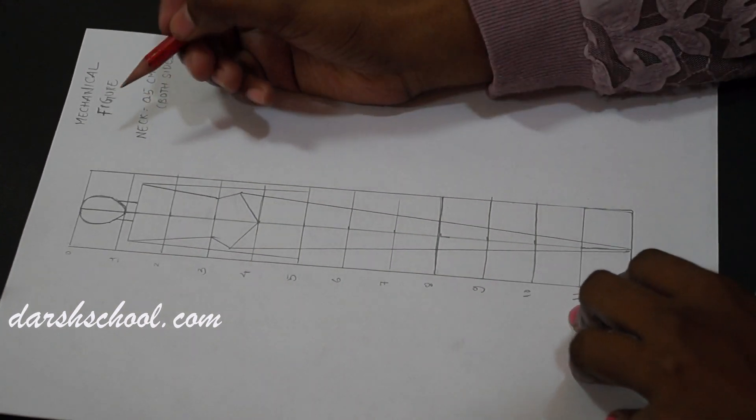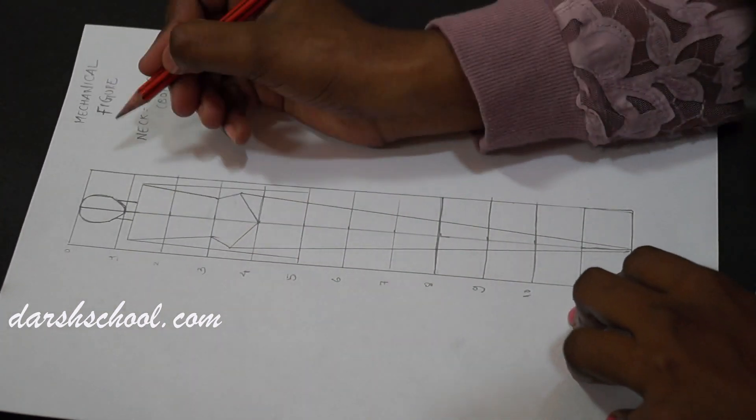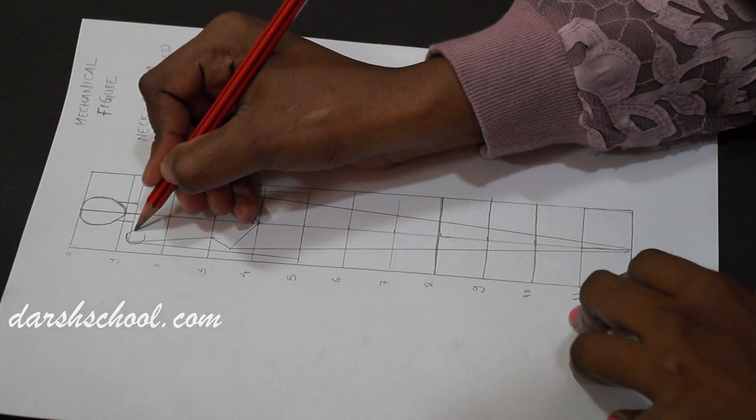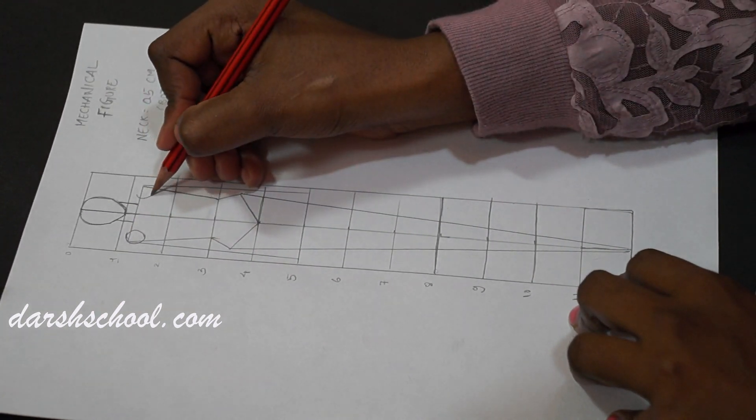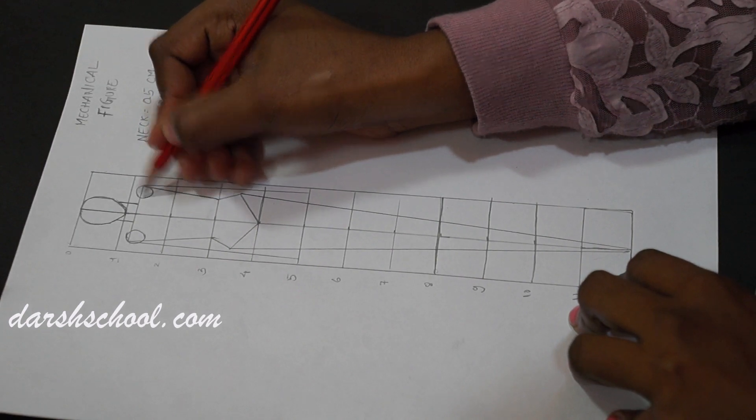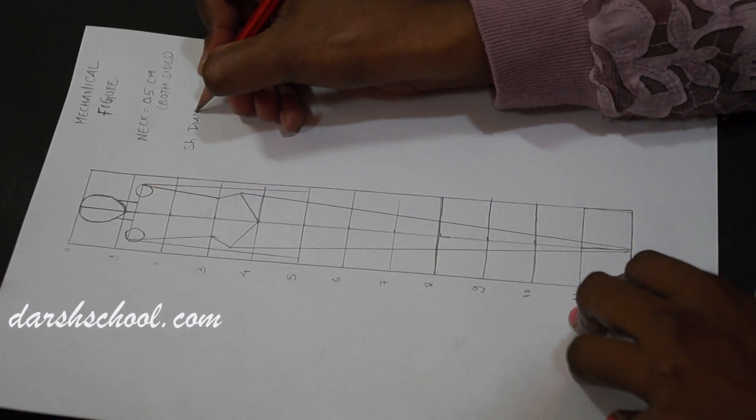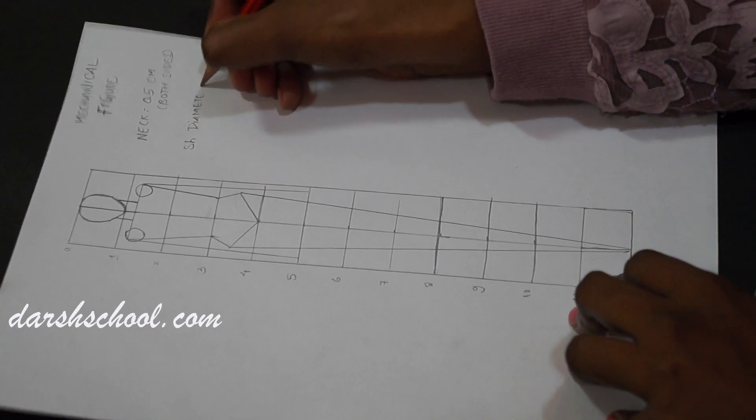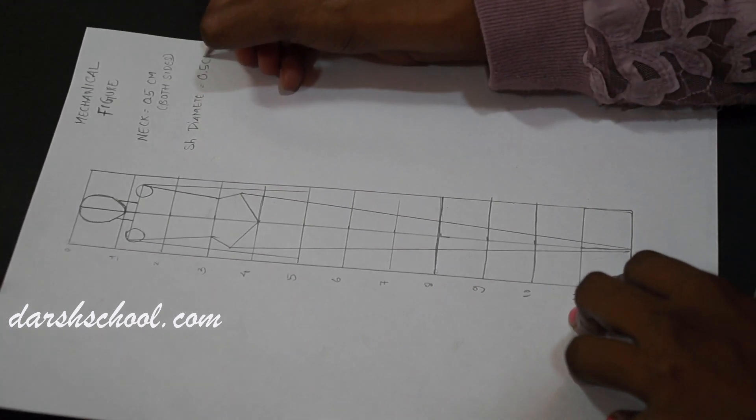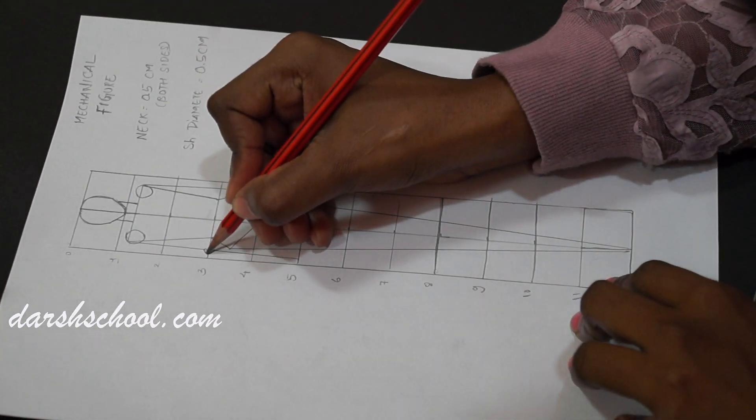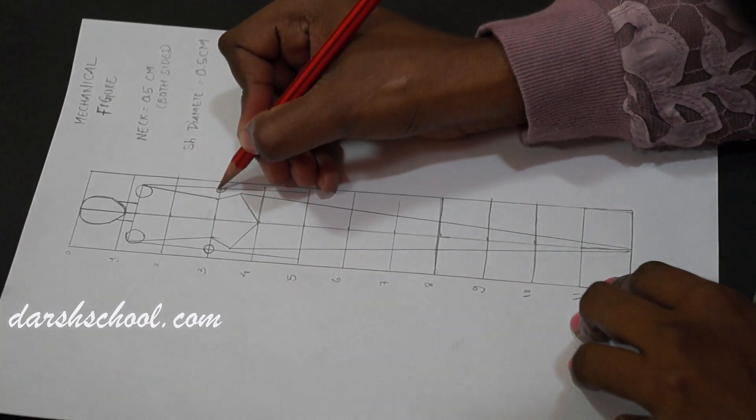So now next is start your circles. So now shoulder. Shoulder diameter for circle is 0.5 centimeters. Now for elbow. This is 1.4 centimeter you can take.